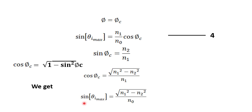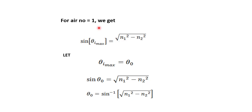Substituting back, we get sin(theta i maximum) = √(N1² − N2²) / N0. Since N0 is the refractive index of air and equals 1, we get sin(theta i maximum) = √(N1² − N2²). Let theta i maximum equal theta naught.